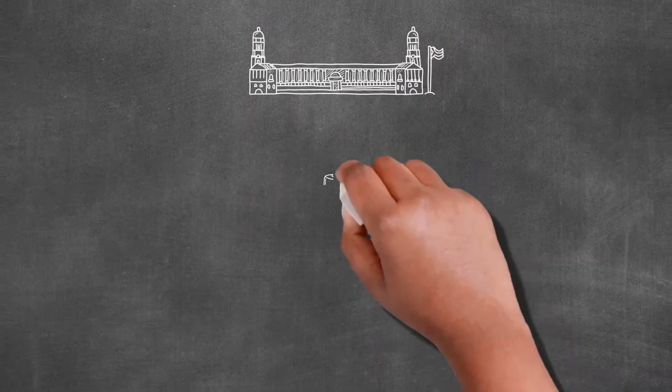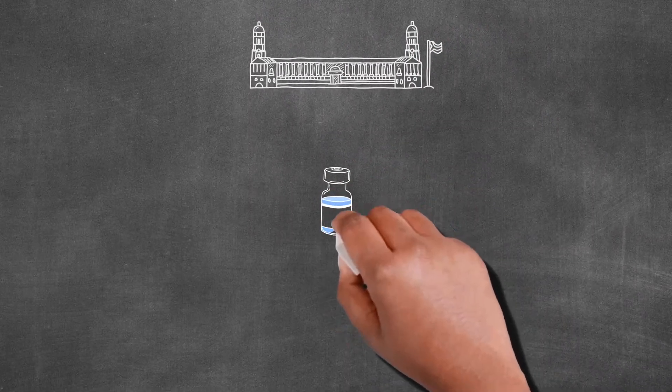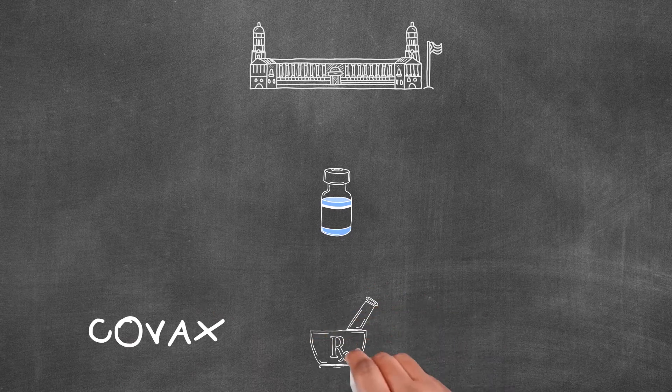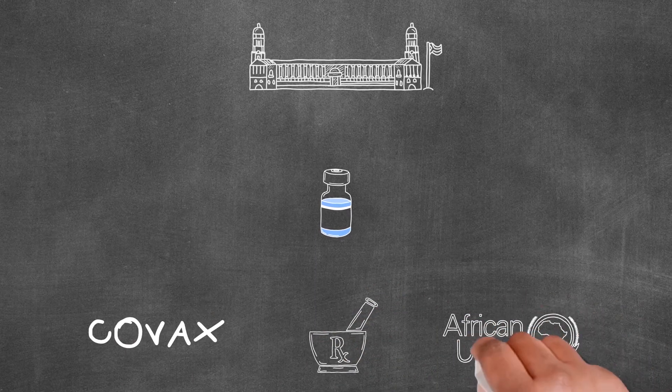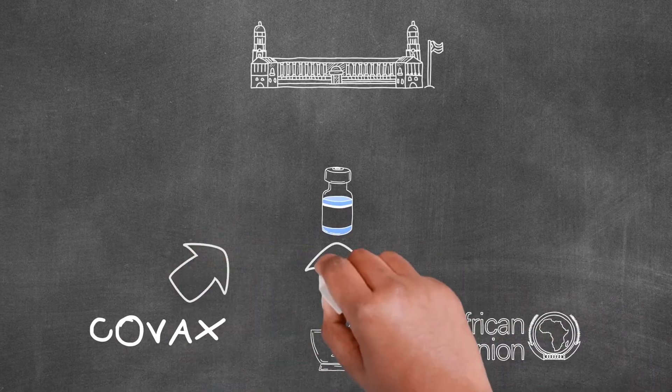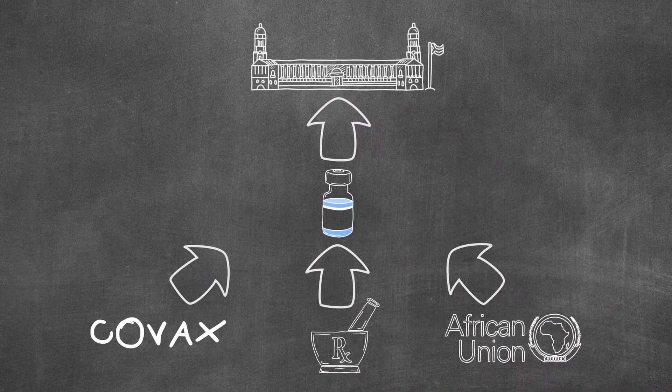The South African government has made plans to get the vaccine through the COVAX facility, bilateral agreements with pharmaceutical manufacturers, and the African Union's vaccine acquisition task team.